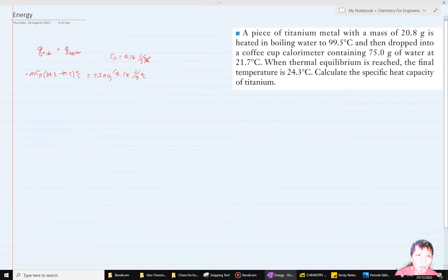We use degree Celsius or Kelvin because we're talking about change in temperature, not just temperature. Multiply by the temperature rise from 21.7 to 24.3, so that would be 24.3 minus 21.7 degrees Celsius. You can expect a positive number for this endothermic process, which equals the exothermic process for titanium.